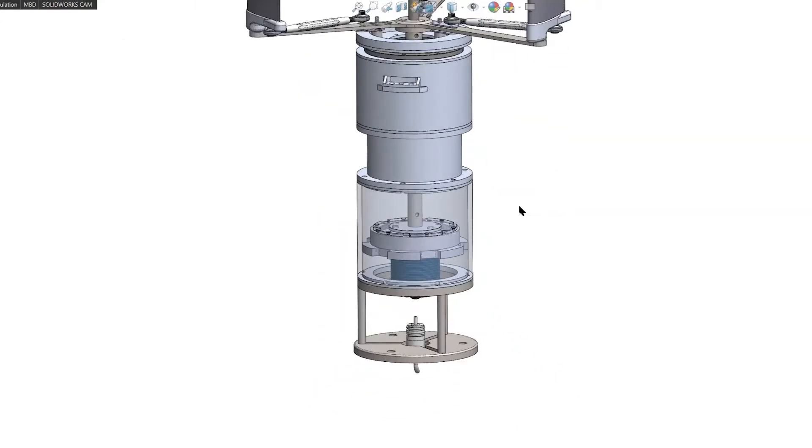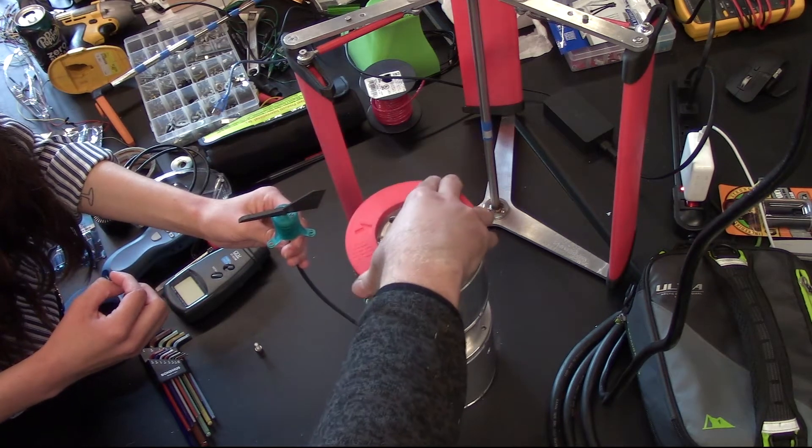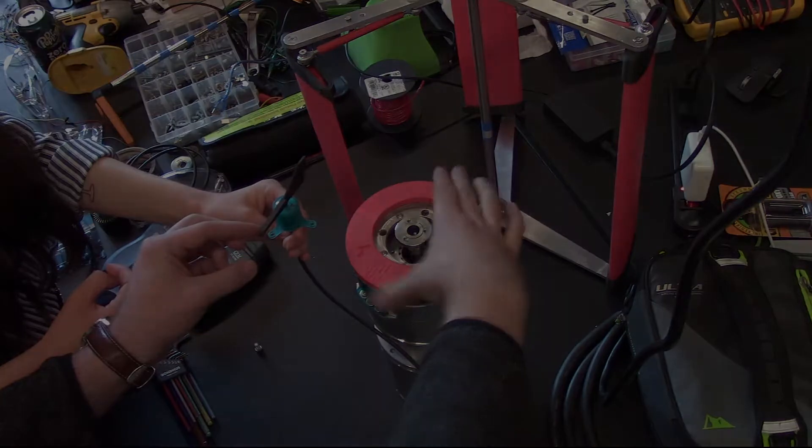The motor will turn in one direction until the Hall sensor finds the magnet, and then it will match the arrow with the direction of the wind vane.